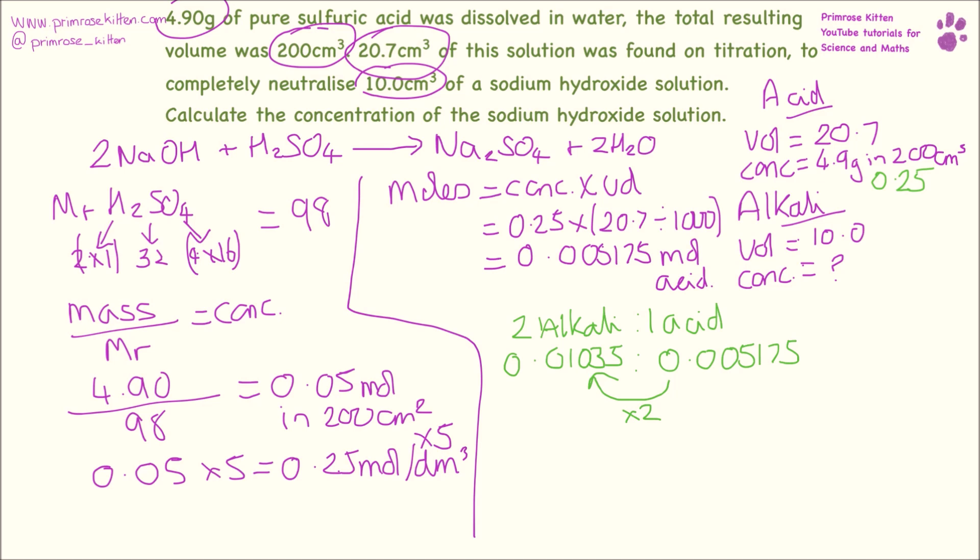Now we are looking for the concentration, so what we need to do is again moles equals conc times volume. We know our moles because we just worked that out: 0.01035. Our concentration is the bit that we are looking for. Our volume is 10 from the question, but remember we need it in decimeters cubed.